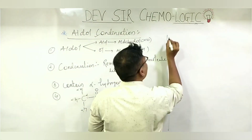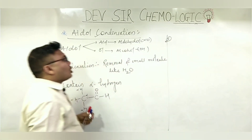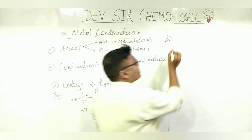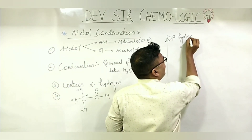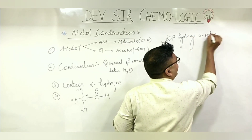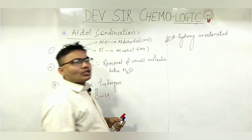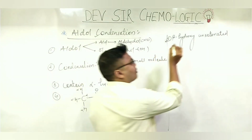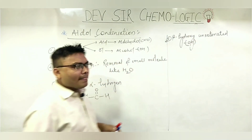Point number 5: aldol condensation always gives a beta-hydroxy unsaturated compound. Beta-hydroxy means at the beta position there is a hydroxy — that is, an OH group. Clear?